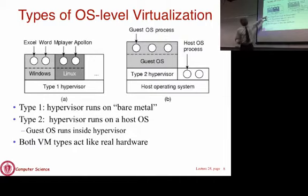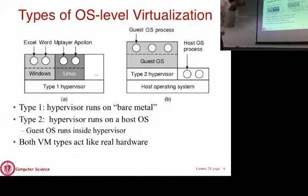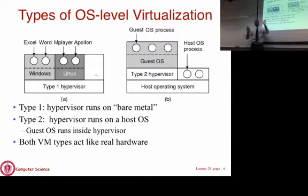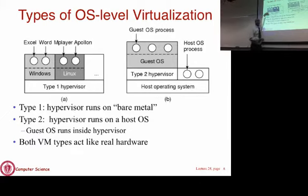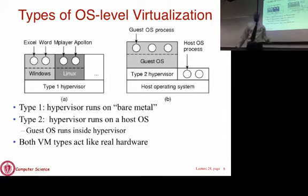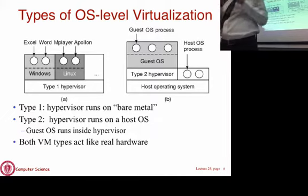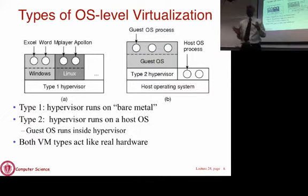Type 1 hypervisors are used on most servers. Here there is no underlying OS — the virtualization software runs directly on bare metal. What you boot is not an OS but a hypervisor, which is the virtualization layer itself. On this hypervisor you can run multiple virtual machines concurrently, each emulating the underlying server hardware in software. For example, on an eight-core server, you can partition it into smaller virtual machines, each given one or two cores.